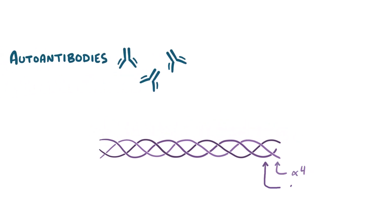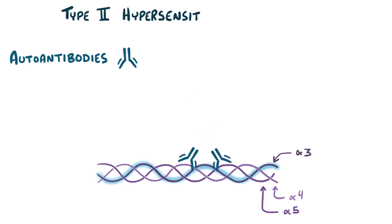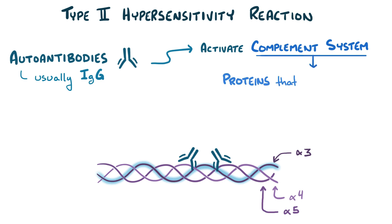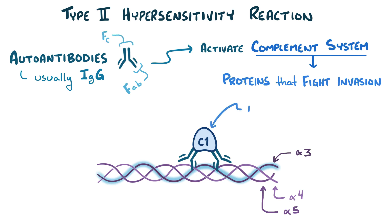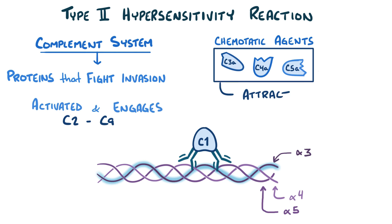In Goodpasture syndrome, autoantibodies bind to a specific part of the alpha-3 chain that's usually hidden deep within the folded chains. This is an example of a type-2 hypersensitivity reaction because once these autoantibodies — usually IgG but rarely IgM or IgA — bind to the alpha-3 chain, they activate the complement system. The complement system is a series of small proteins present in the blood that act like an enzymatic cascade to fight off bacterial and other pathogenic invasions. When the FAB portion of the IgG molecule inappropriately binds to the alpha-3 chain, C1, the first complement protein, binds to the FC portion of the IgG molecule. This activates C1, which starts engaging other members of the complement family, C2 through C9. Some of these are activated by being cleaved by an enzyme, and the cleaved fragments C3a, C4a, and C5a act as chemotactic agents, meaning they attract certain cells like neutrophils.